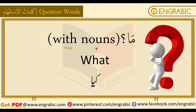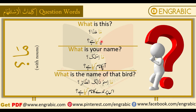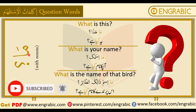Next word is 'ma,' used with nouns. Its meaning is 'what,' and in Urdu it is 'kya.' For example: 'What is this?' — ma hadha — yeh kya hai. 'What is your name?' — ma ismuka — aap ka naam kya hai. 'What is the name of that bird?' — ma ismu dhalikat ta'iru — us parinde ka naam kya hai. Remember, 'ma' alone is used with nouns — not with verbs, which is a different case.